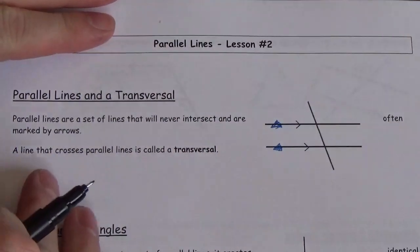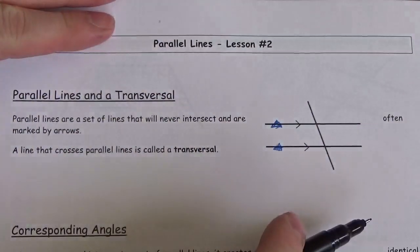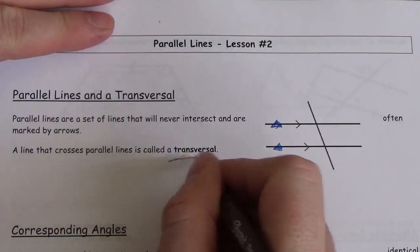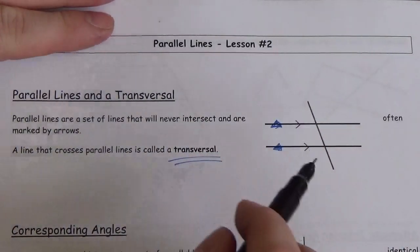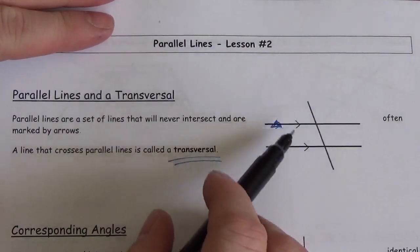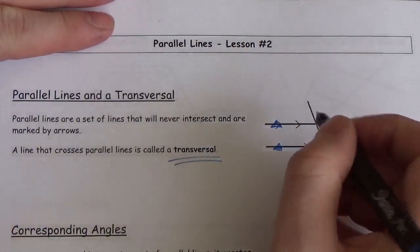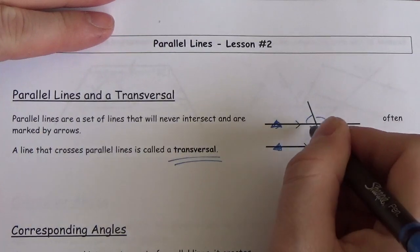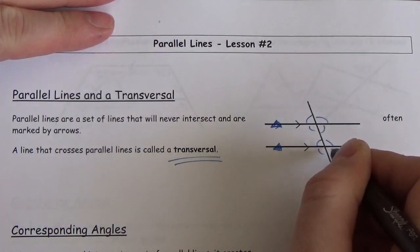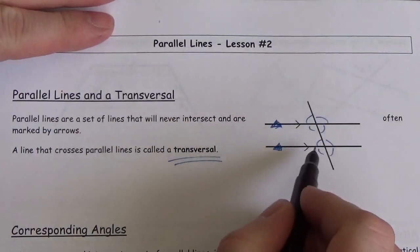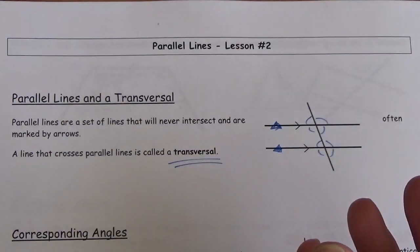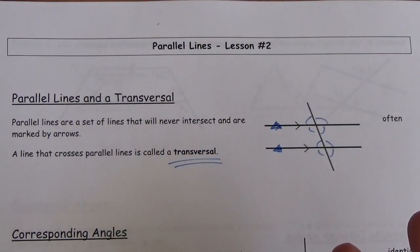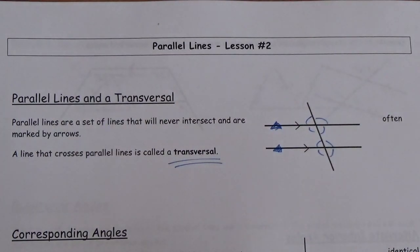Now, when you draw a line that crosses both of them, we call that line a transversal. What that transversal does is it creates a set of angles — there are all these angles formed. What we want to do now is take a look at the relationships between those angles that are formed by the transversal and the parallel lines.